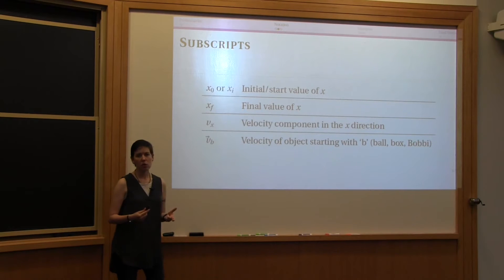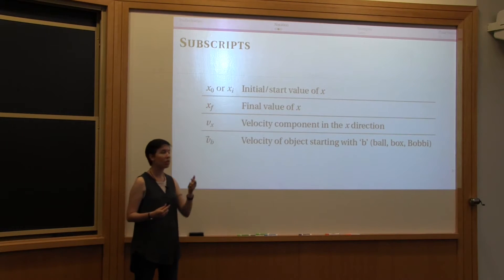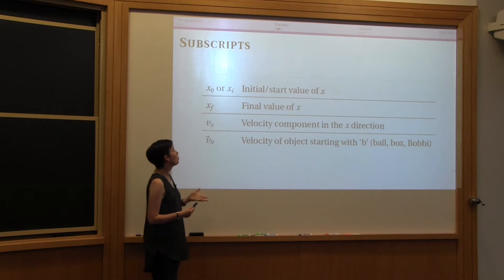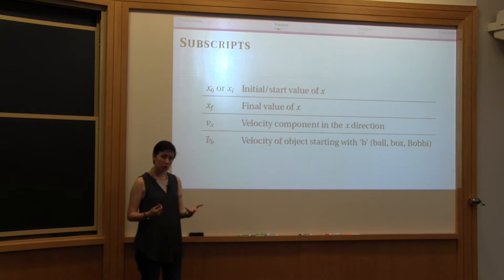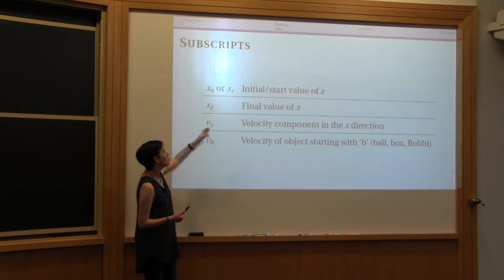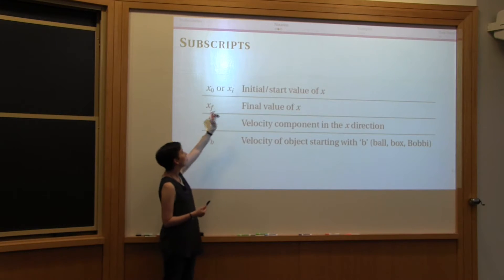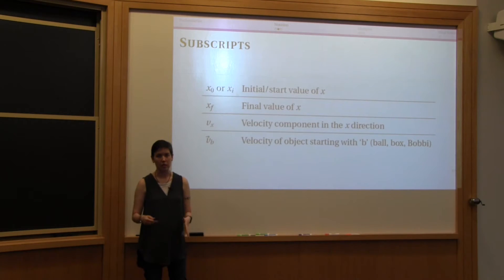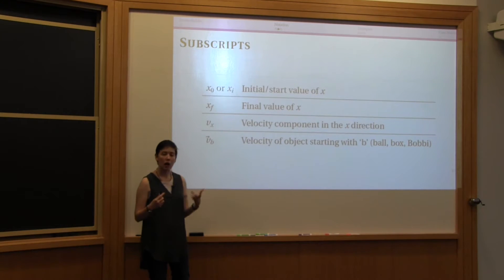The first thing we'll use a subscript for is to denote a specific version of a variable. For instance, x is frequently used to mean position, and we can give it subscripts such as 0 or i to mean the initial value or the starting value. This is something you'll see a lot — the book will typically use i to mean initial value.